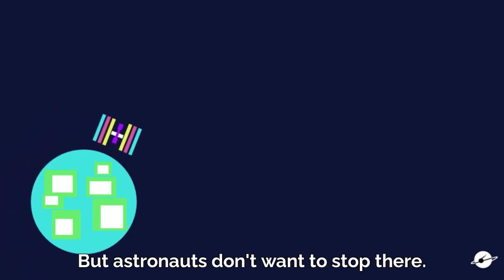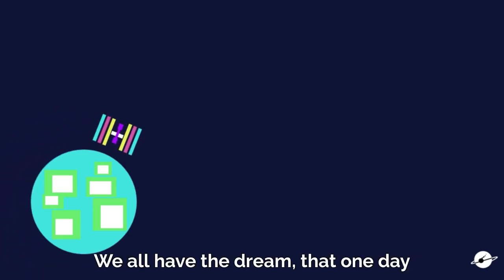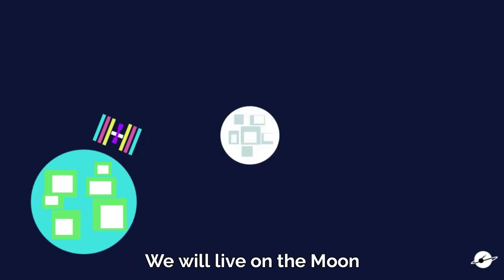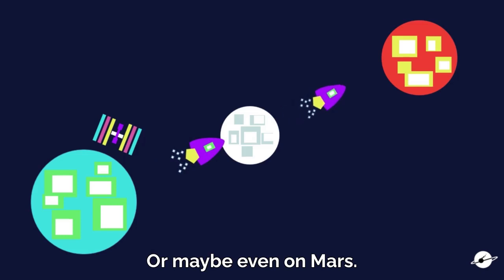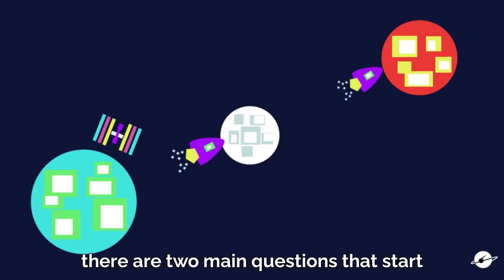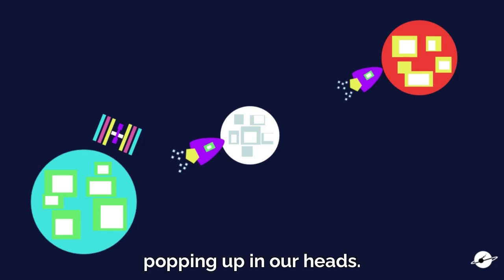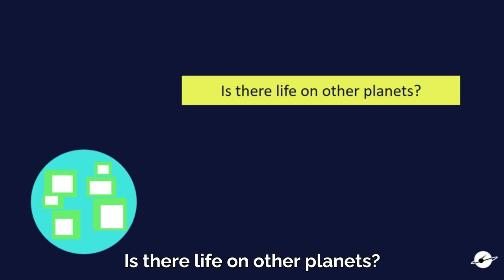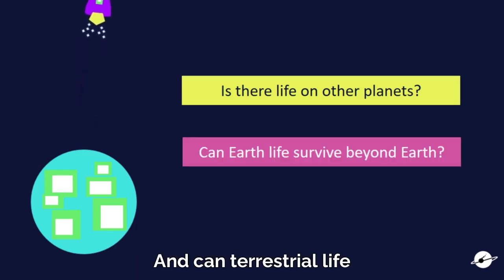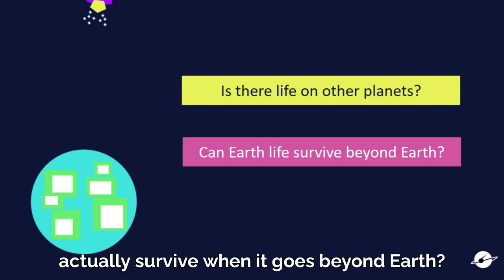But astronauts don't want to stop there. We all have the dream that one day we will live on the Moon, or maybe even on Mars. And as we explore space, there are two main questions that start popping up in our heads. The first one is, is there life on other planets? And can terrestrial life actually survive when it goes beyond Earth?